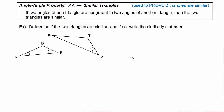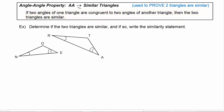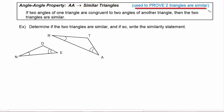In your geometry class you learn the Angle-Angle property, which states that if two angles of one triangle are congruent to two angles of another triangle, then the two triangles are similar to each other. We can abbreviate this using AA for angle-angle. The arrow stands for 'implies,' so if you have two sets of angles equal to each other, that implies the two triangles will be similar. We get to use this theorem to prove that two triangles are similar.